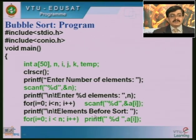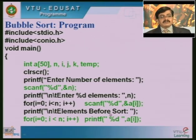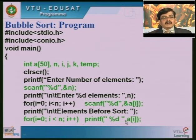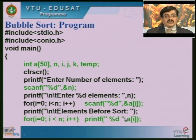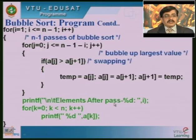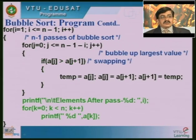After reading, we display the elements before sorting using a loop: i = 0, i < n, i++, printing each a[i]. We display the elements to the user before sorting, and after sorting we will also display the resulting sorted elements — showing what we get after sorting. This is the code corresponding to the bubble sort algorithm.